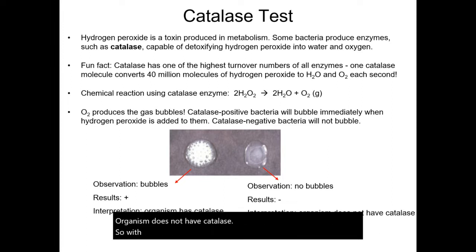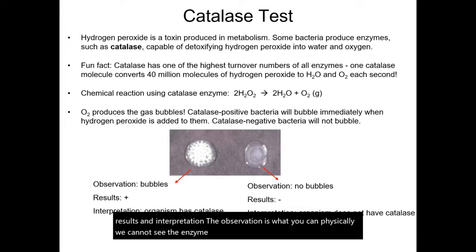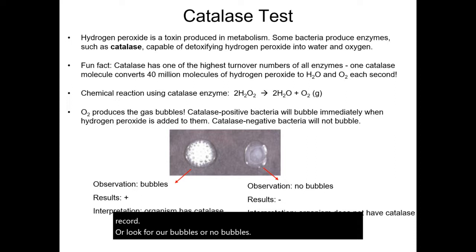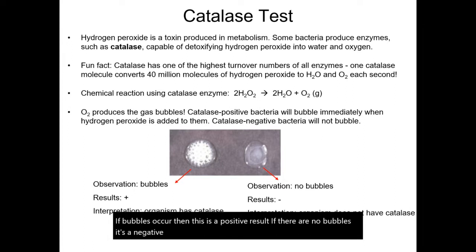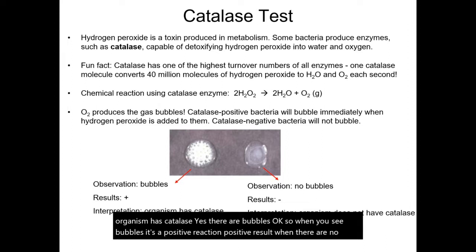With this unit and unit three, it's really important that you know the difference between observation, results, and interpretation. The observation is what you can physically see. We cannot see the enzyme catalase — it's microscopic — but we can see bubbles or an absence of bubbles. So the observation you record are bubbles or no bubbles. If bubbles occur, that is a positive result. If there are no bubbles, it's a negative result. Think of positive as meaning yes — yes, the organism has catalase; yes, there are bubbles.